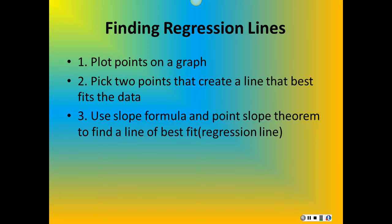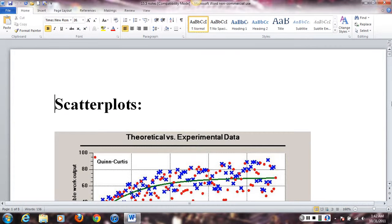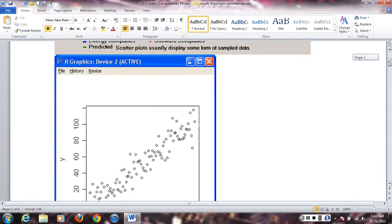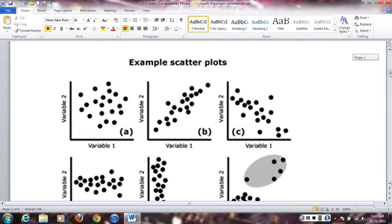So the basic ways of finding a regression line are to plot points on a graph, pick two data points that would create a line of best fit based on your own observation, use slope and the slope formula to find a line of best fit. Again, just review, look at some scatter plots. Here's a common one, just again a collection of data. It could be curved like this, it could be straight like this.